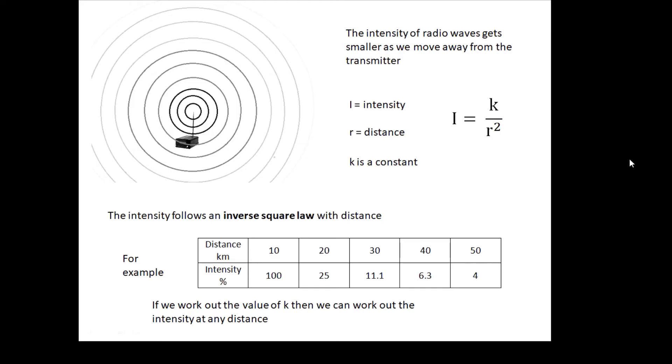Basically, if you double the distance, is the intensity half as much? No, it's a quarter. Look at this table: going from 10 kilometers to 20 kilometers, the intensity goes from 100 to 25 percent. Going from 20 to 40, the intensity is a quarter as much. A quarter of 25 is 6.3. It follows an inverse square law.